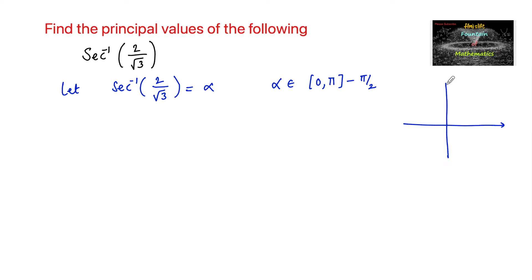We can consider either quadrant 1 or quadrant 2, but alpha should not be equal to π by 2.